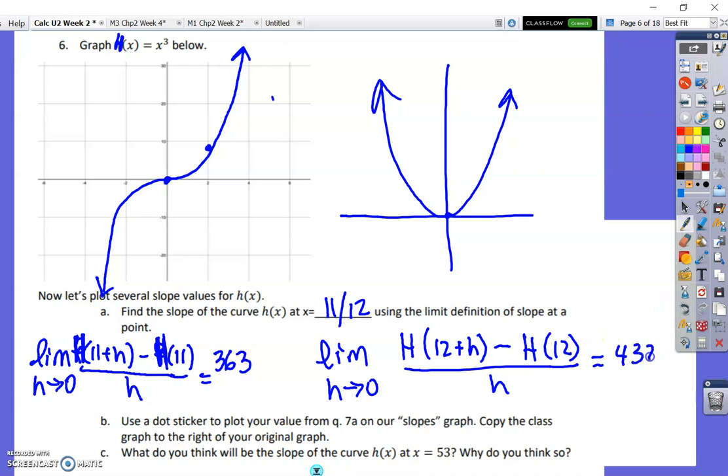This limit is 432, which was definitely not on my graph. I think my graph only went up to around 300 and something. So these two don't fit on the graph.